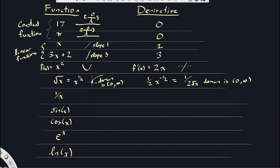Now we have the function 1/x — this is a hyperbola. To figure out its derivative, I'd express this as x to the negative 1 and bring the power down: negative 1 times x to the negative 2. I usually drop the 1 and write negative x to the negative 2, or negative 1 over x squared. Notice the derivative is always negative — no matter where you stand on this graph, you're always going downhill, so the slope is always negative. And it's undefined at 0.